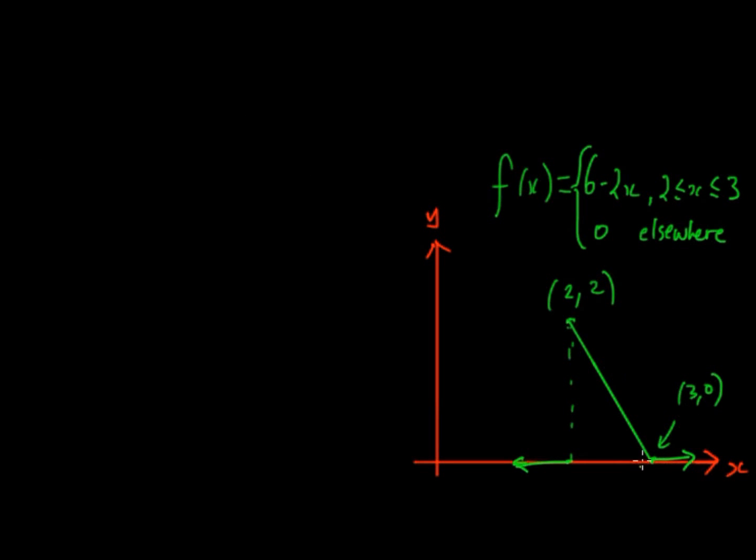I've just graphed it here. So you can check that so it's 2, 2, 3, 0, 0 elsewhere and then obviously the area is there.